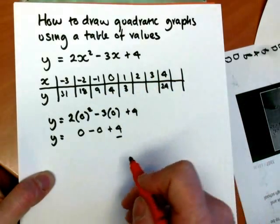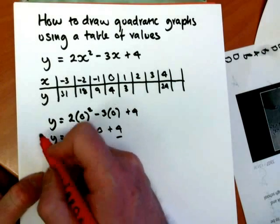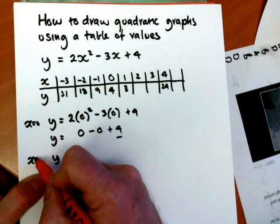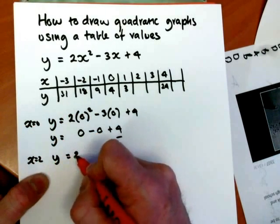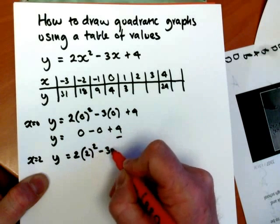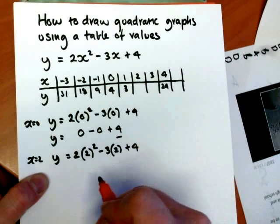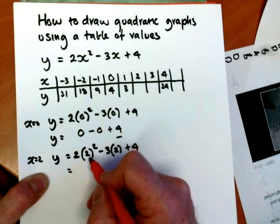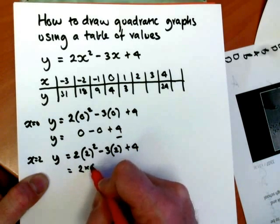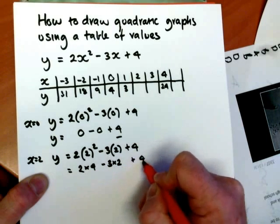Now we'll go to x equals 2. So when x equals 2, we have y equals 2 times 2 squared minus 3 times 2 plus 4. 2 squared is 4, so we're going to have 2 times 4 minus 3 times 2 plus 4.